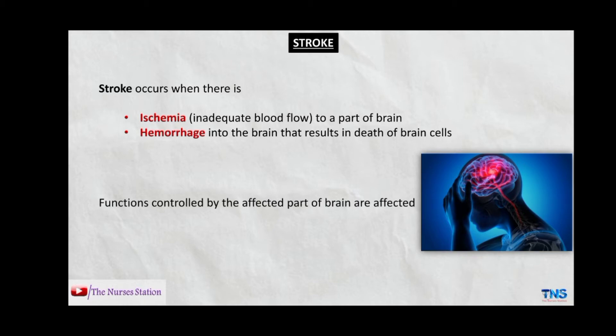The functions controlled by the affected part of the brain are affected. For example, visual functions are controlled by the occipital lobe, and if the occipital lobe of the brain is affected, the visual functions will be impaired. The other terms used for stroke are brain attack and cerebrovascular accident.